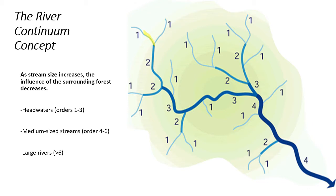When two first-order streams come together, they form a second-order stream. When two second-order streams come together, they form a third-order stream. Streams of a lower order joining a higher-order stream do not change the order of the higher stream. While it's possible to have a second-order stream flow into a fourth-order stream, the most important thing to remember is that the fourth-order stream is formed by two third-orders coming together, and so on.